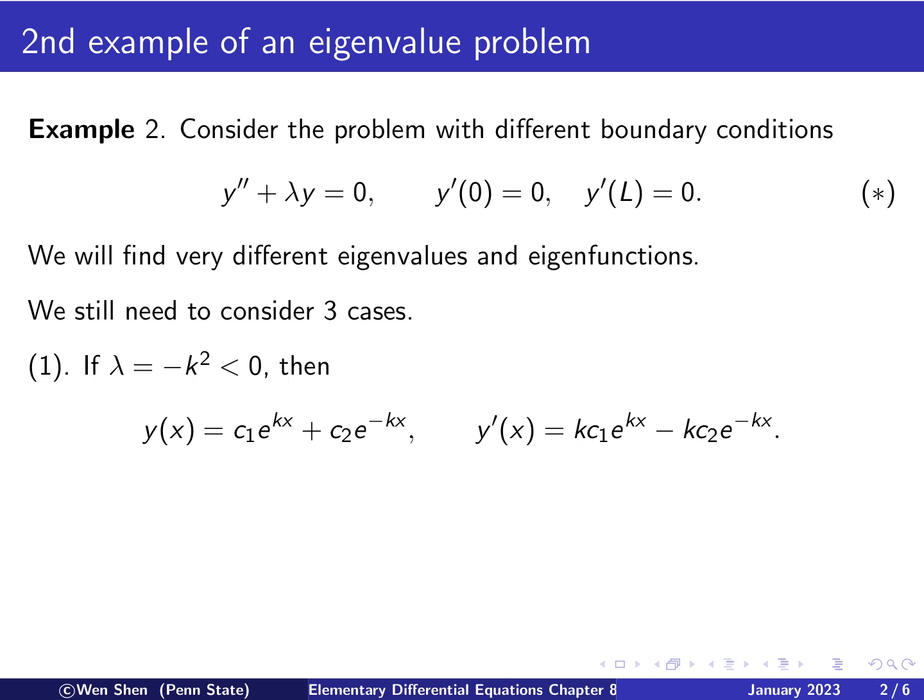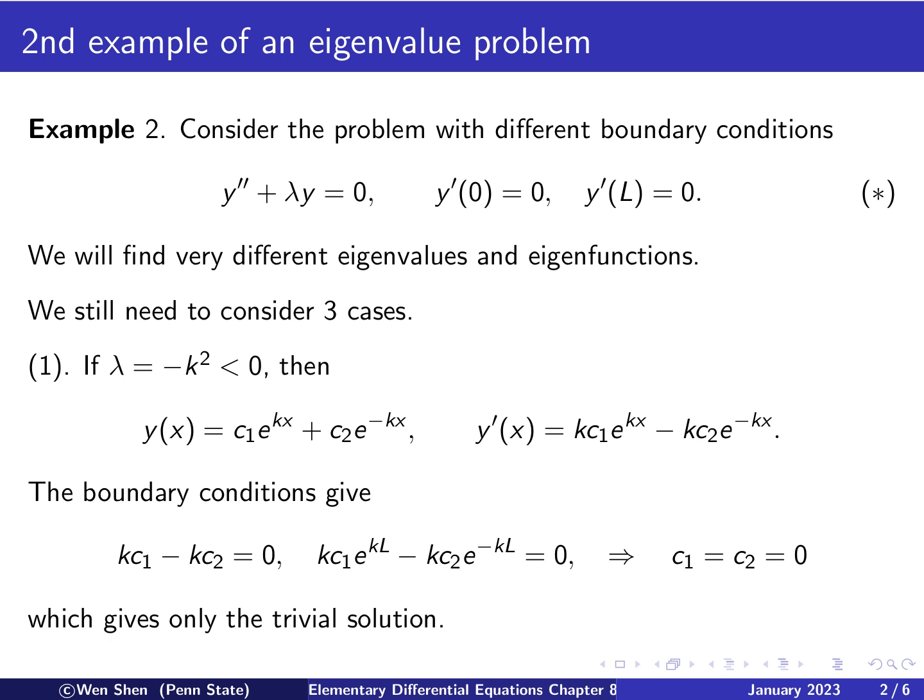Okay, and now we need to verify the boundary condition, which involves the derivative. So let's differentiate this. You differentiate this, you get a k in the front, and then you differentiate this, you get a negative k in the front. Okay, so let's put the boundary condition. So y prime at 0, and then you will have these two will be 1, so you get kc1 minus kc2, which shall be 0 according to the condition. And then if you evaluate the derivative at L, then you have to change the x into L here, and that shall be 0.